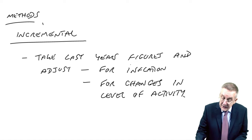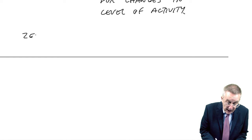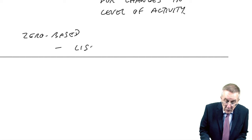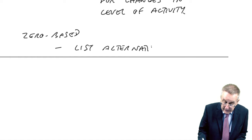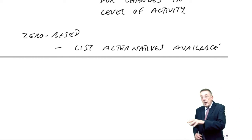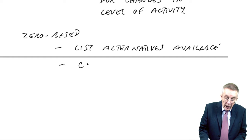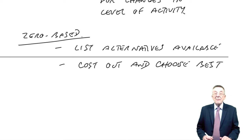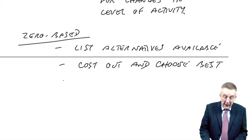Well, that is zero-based. With zero-based budgets, you list the alternatives available. Fixed line, mobiles, internet. You cost out and choose the best. And then you prepare the budgets.